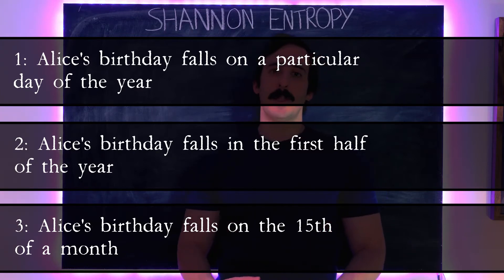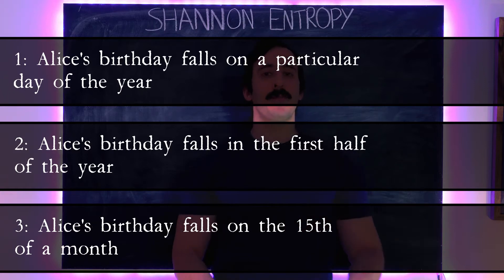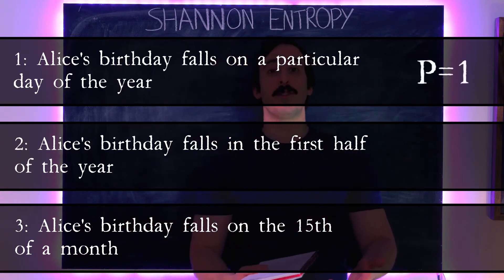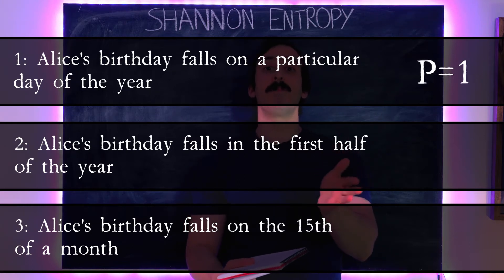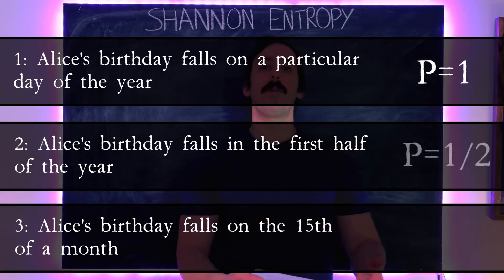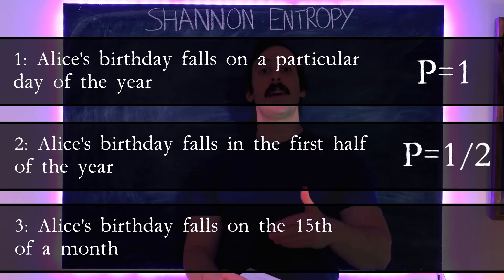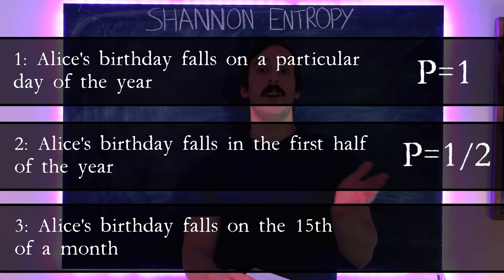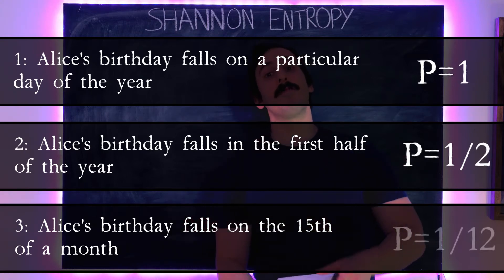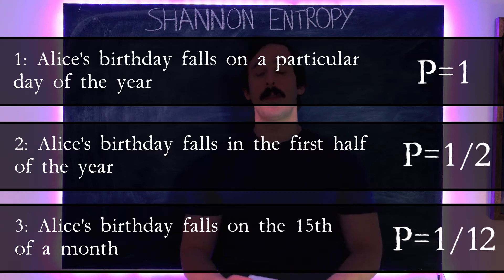All three of those statements have different probabilities of being true. The probability of statement one is one — 100% — since Alice must be born on a particular day of the year. The probability of statement two is one half, and the probability of statement three is one twelfth.